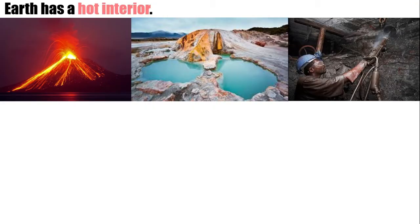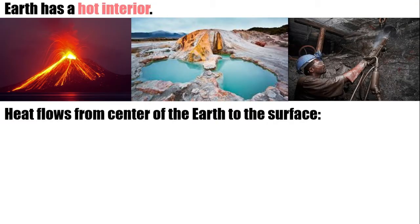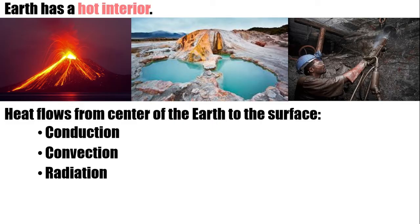Earth has a hot interior. That's why we have volcanoes, hot springs, and mines at depth. Heat flows from the center of the Earth to the surface via conduction, convection, and radiation.